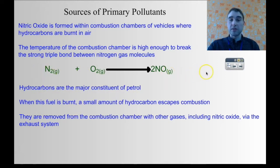So how do we make nitric oxide? Nitrogen and oxygen react in the internal combustion engines of cars or diesel vehicles, or in industrial furnaces. The triple bond between the nitrogen atoms breaks up and it reacts with the oxygen to produce the nitric oxide.